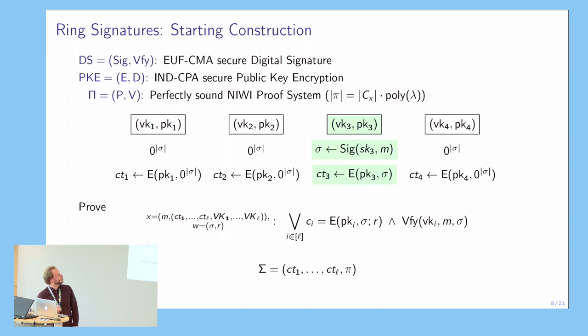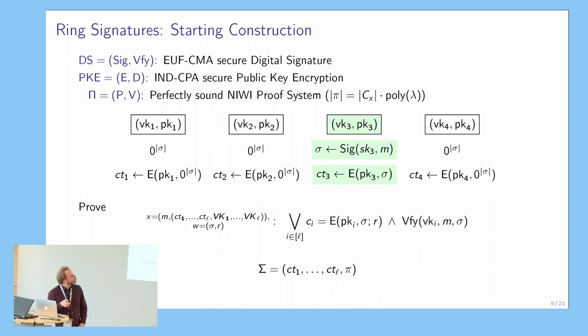It should be immediately clear that this signature, although it is without trusted setup, is of linear size because of this array of ciphertexts. I will now show you how we prove unforgeability and anonymity for this scheme, because the basic idea will stay the same for the other constructions as well.